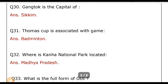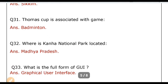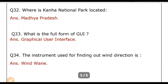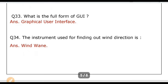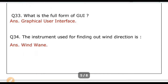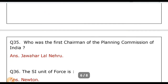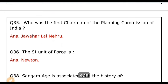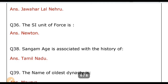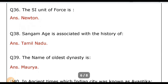Thomas Cup is associated with which game? Answer: Badminton. Where is Ghana National Park located? Answer: Madhya Pradesh. What is the full form of GUI? Answer: Graphical User Interface. The instrument used for finding out wind direction is? Answer: Wind vane. Who was the first Chairman of the Planning Commission of India? Answer: Jawaharlal Nehru. The SI unit of force is? Answer: Newton. Sangam age is associated with the history of? Answer: Tamil Nadu.